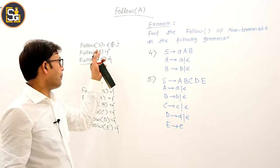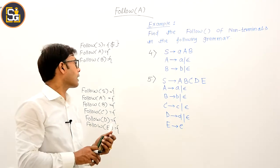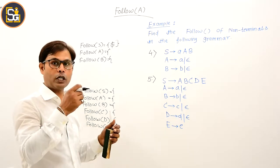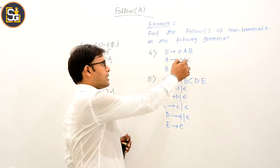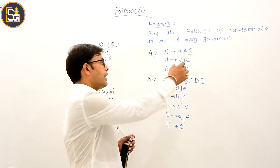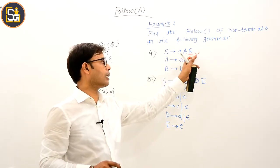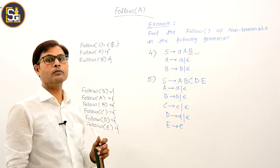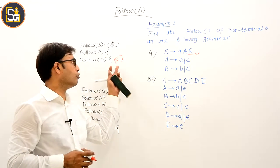Moving ahead, let's talk about capital A and capital B — the order doesn't matter much. Suppose I find the FOLLOW of B. Is capital B present anywhere on the right-hand side? Yes, in this particular production, B is present. What is its immediate right? Nothing. Rule 4 says: if the non-terminal whose FOLLOW you are finding has nothing to its immediate right, then FOLLOW of B equals FOLLOW of S. FOLLOW of S is already computed, and therefore FOLLOW of capital B equals dollar.